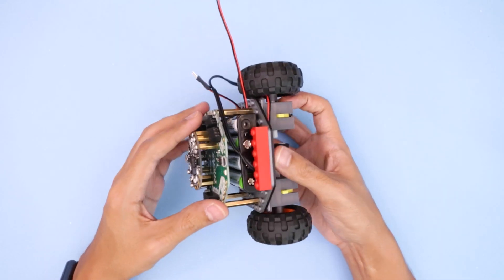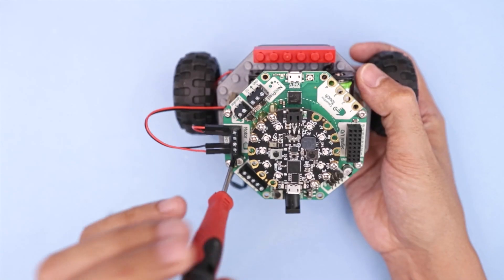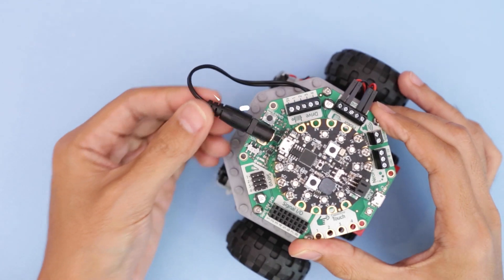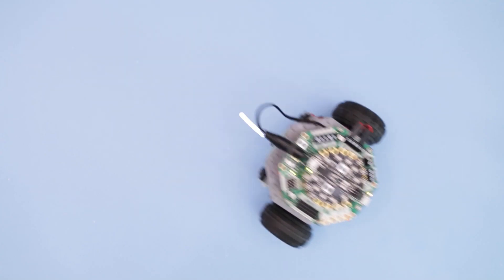Connect the wires from the motor into the screw block terminals and plug the battery into the DC barrel jack. Program the movements of the motors to control your rover and create dance sequences.